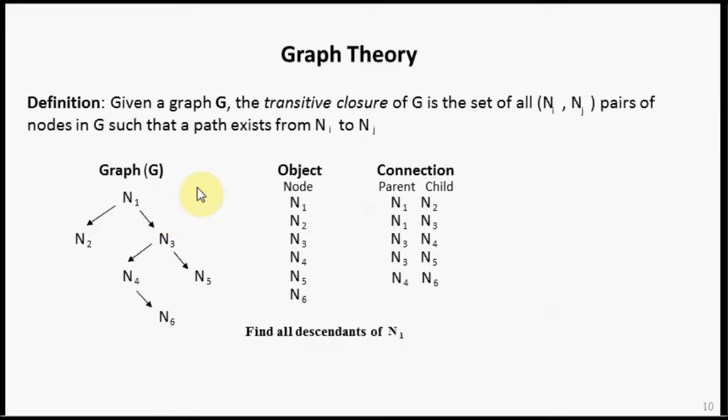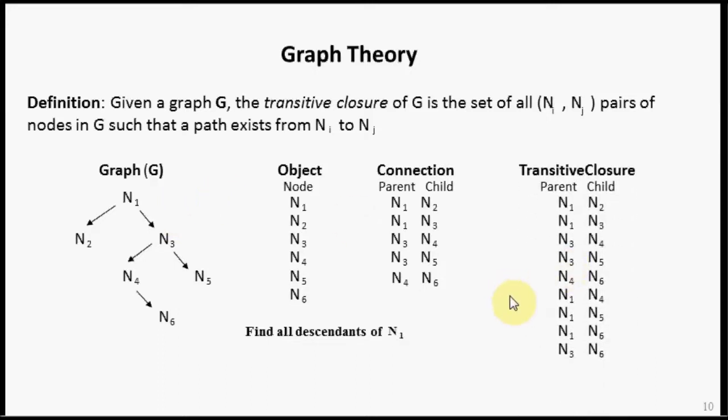So in fact, the transitive closure of a graph can be represented using a relational table here. So the way to think of the population of this table, you can think of it as follows.